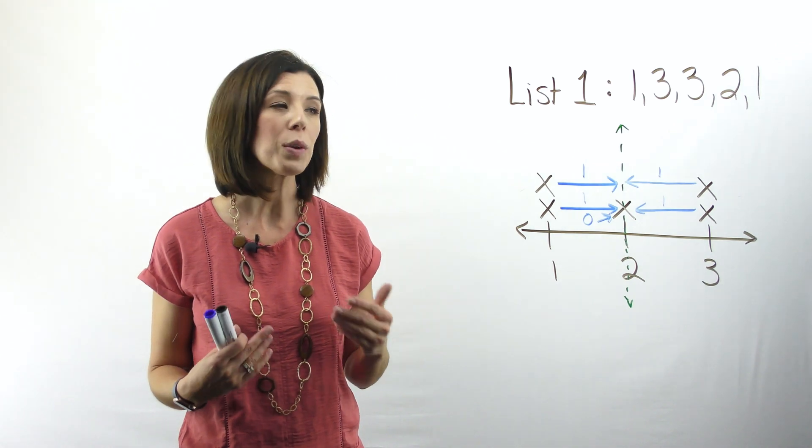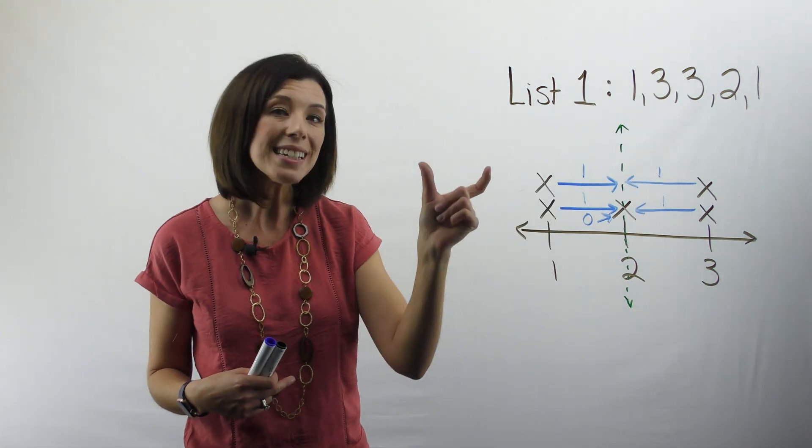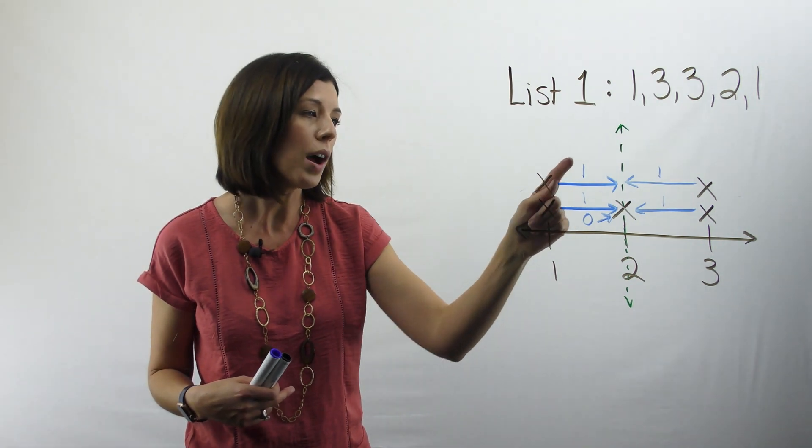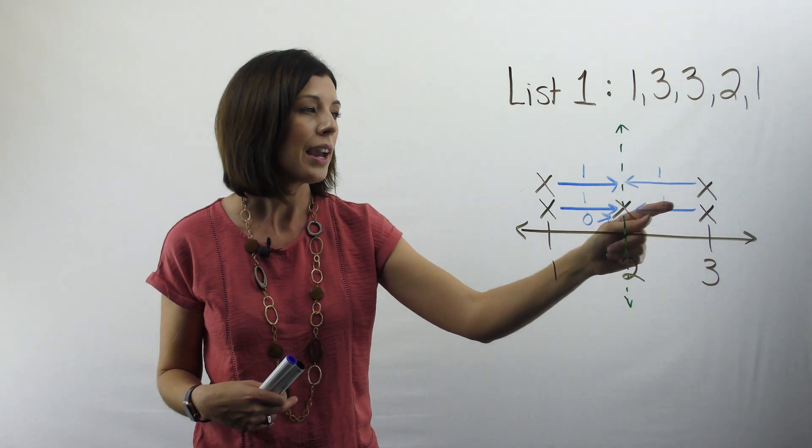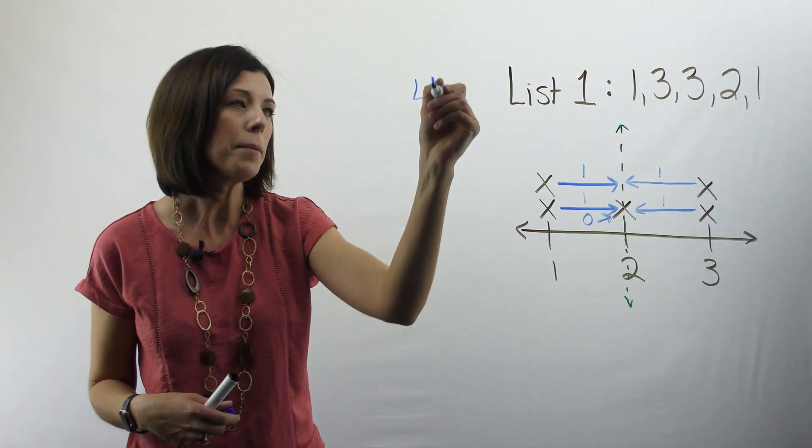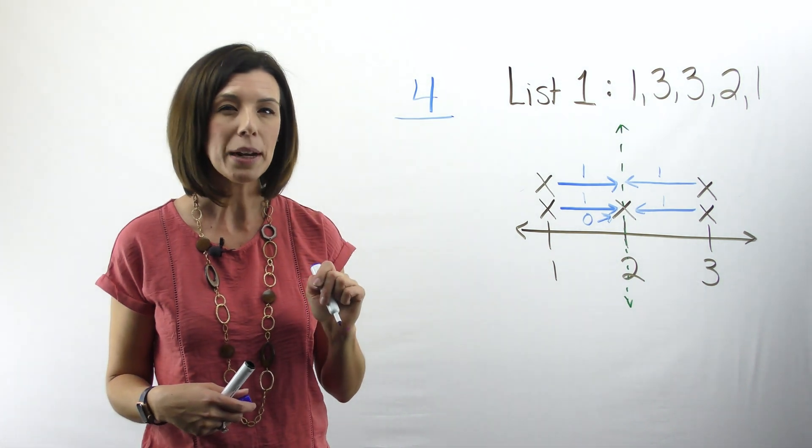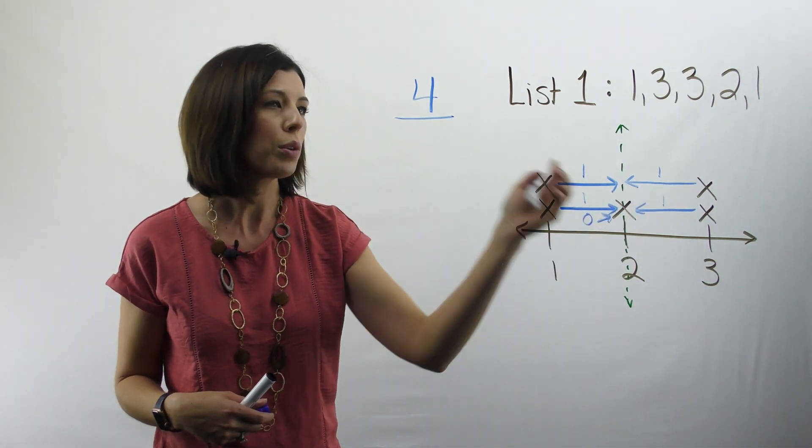So again, to find the average, we're going to end up adding these all up. I'm going to add the distance, the average distance, so 1 plus 1, which is 2, plus 0, which is 2, 3, and 4. So I have a distance of 4, but I have to remember how many data points I have. I don't have 4, I have 5, right? 1, 2, 3, 4, 5.